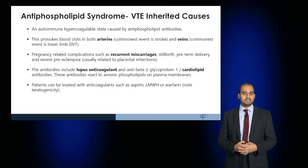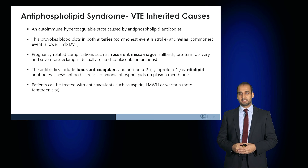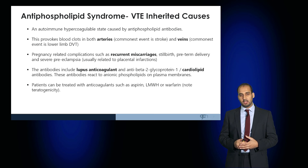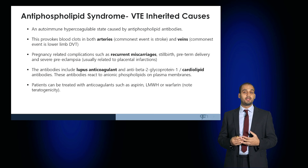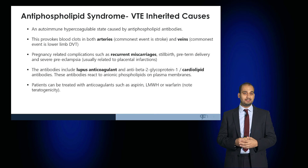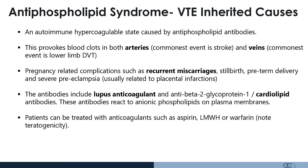Antiphospholipid syndrome is an autoimmune hypercoagulable state caused by antiphospholipid antibodies. In this condition, blood clots are provoked in both arteries and in veins, leading to strokes and lower limb DVTs, and in pregnant patients can lead to recurrent miscarriages.